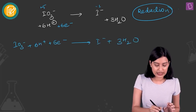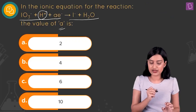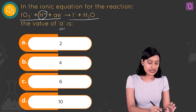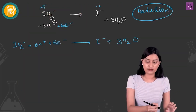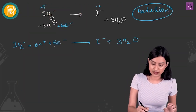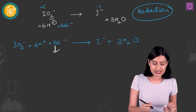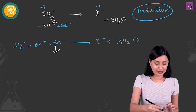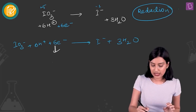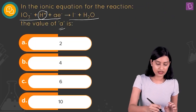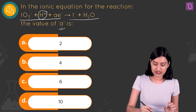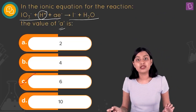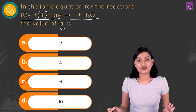The final balanced equation is IO3⁻ + 6H⁺ + 6e⁻ → I⁻ + 3H₂O. In the question they ask for A, the stoichiometric coefficient of the electrons, so A = 6. Option C, six, is the right answer to this question.